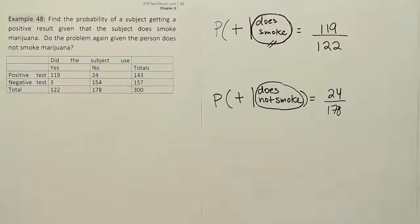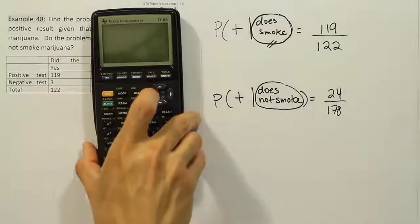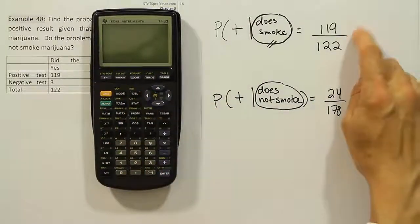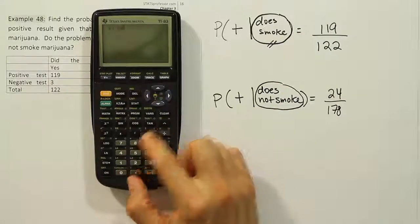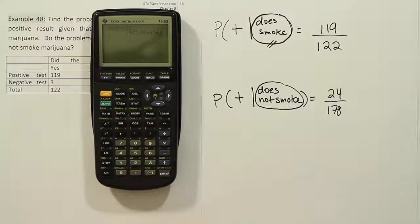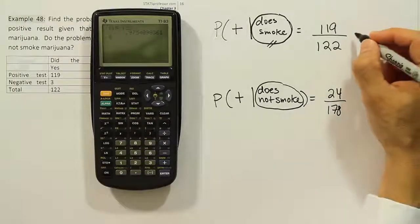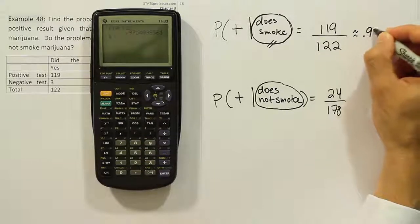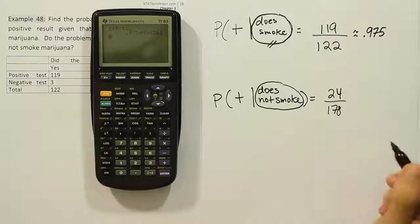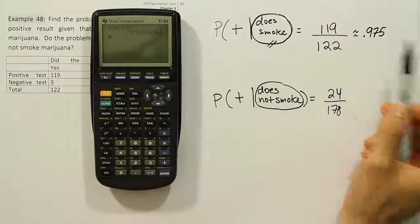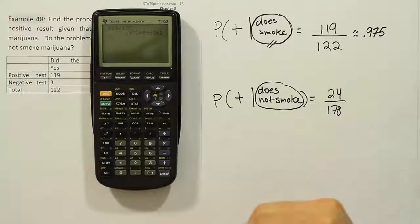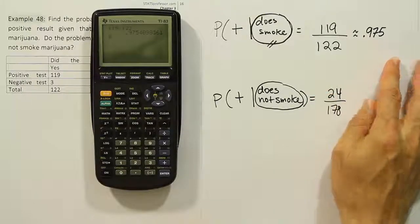Let's work these out and get the decimal numbers so we can make more sense of these numbers. Already you can see that this seems to be a much higher probability. But if I work it out, 119 divided by 122, I see that it's a 97.5% chance, 0.975. So that means overwhelmingly likely that you will get caught if you do smoke by this test. This drug test is good at catching people. It only misses people apparently 2.5% of the time.